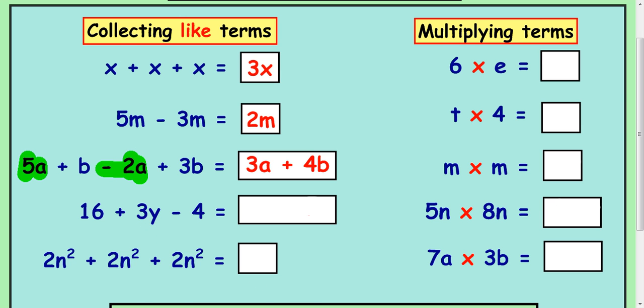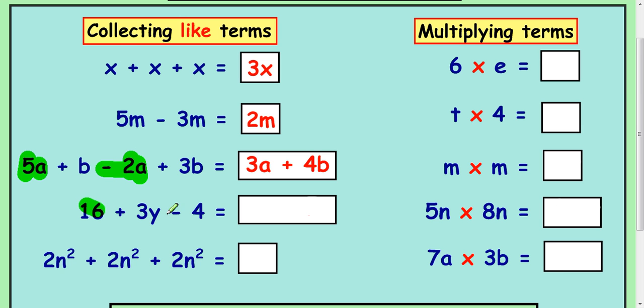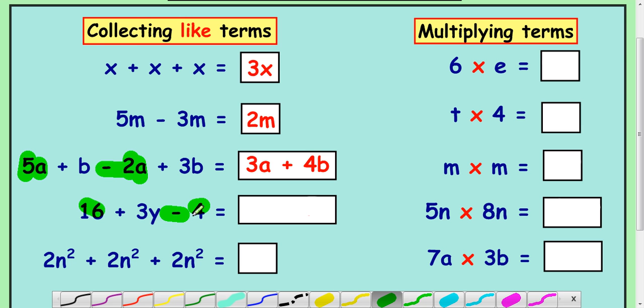In this next example here, we can look at the y's first and there's no more y's to add or subtract from this one. But there are numbers. Numbers are the same terms, so we can collect them up. We've got a 16 and a take away 4. So that would cancel down to 16 take away 4, which is 12.